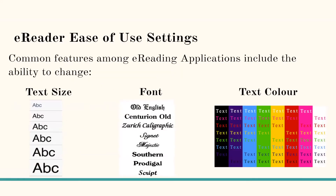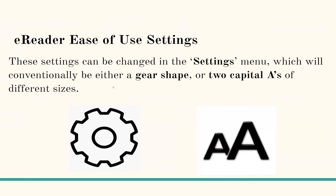E-reader ease of use settings. Common features among e-reading applications include the ability to change text size, the ability to change font for more comfortable reading, and the ability to change text color, which can increase contrast and make text easier to read. These settings can be changed in the settings menu, which will conventionally be either a gear icon or two capital A's of different sizes.